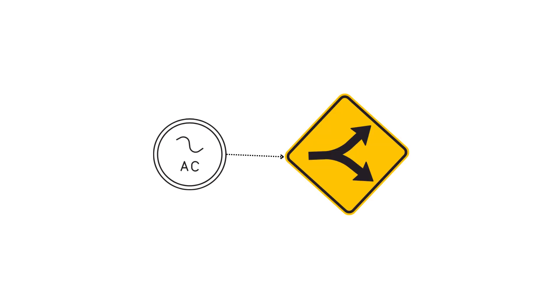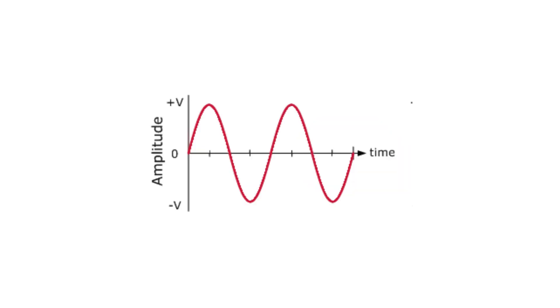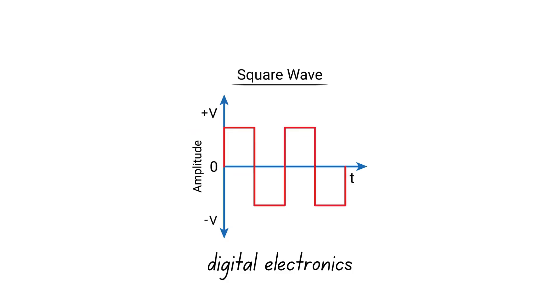AC can come in a variety of waveforms such as sinusoidal, which is the most common type, the square wave, which is vital in digital electronics for representing binary values,